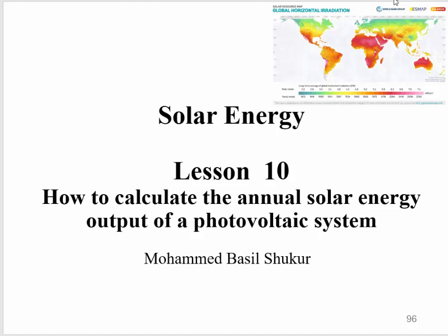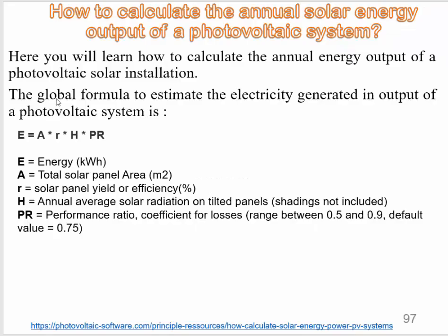This is lesson number 10 about solar energy. During this lesson, I'm going to explain how to calculate the annual solar energy output of a photovoltaic system. The global formula to estimate the electricity generated is: E equals A multiplied by R multiplied by H multiplied by PR.